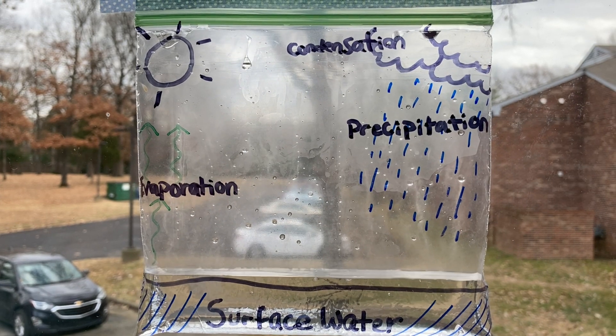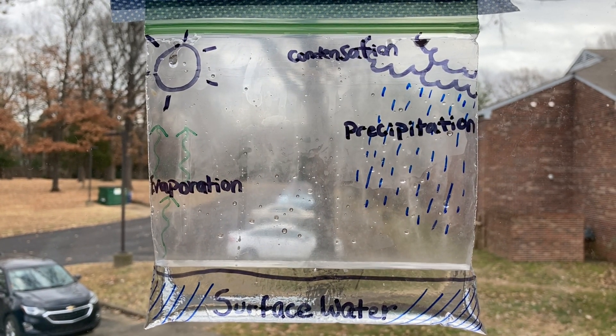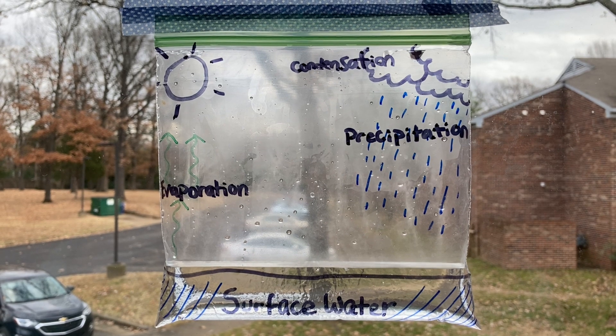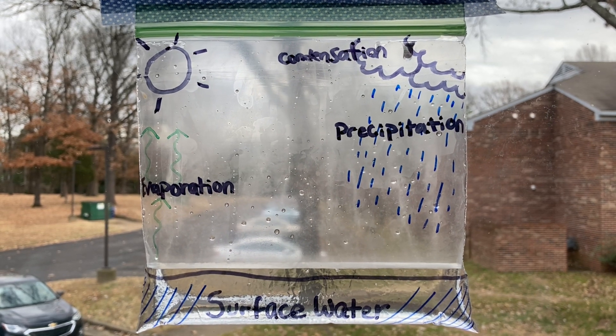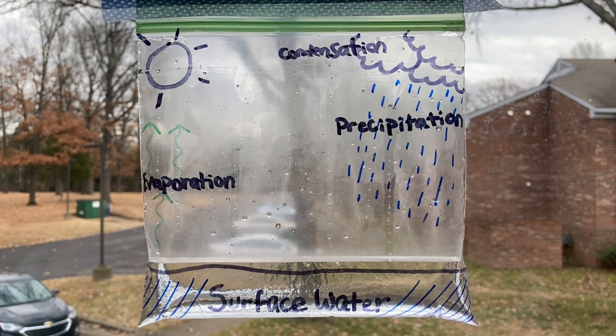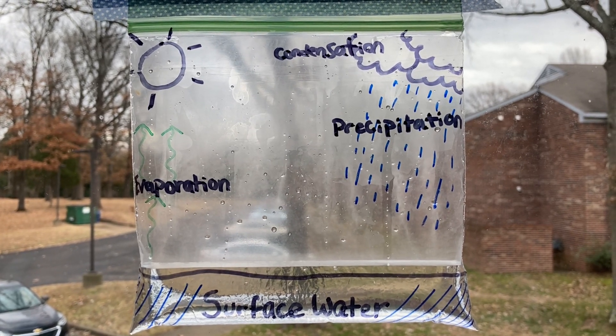24 hours later. Now that it's been 24 hours, let's go see what happened with our water cycle in a bag. Let's record our observations in our notebooks. What happened inside your bag? Inside mine, I noticed that there is now water on the sides of the bag — this is condensation. There's also water falling down the sides — that is an example of precipitation. But how did the water move up the bag from our original surface water? The natural sunlight — you're exactly right. That little bit of sun coming through your window was enough to heat up our surface water and create evaporation.